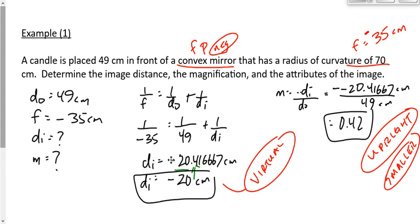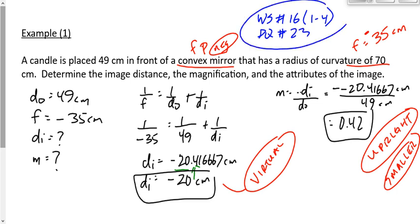Your homework for tonight: worksheet number 16 on converging mirrors — but only the first four of the eight questions. In addition, practice question set number 23. So a grand total of six questions tonight: two from one and four from the other.